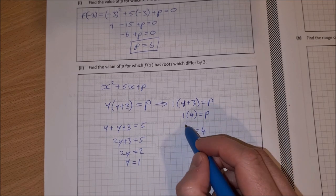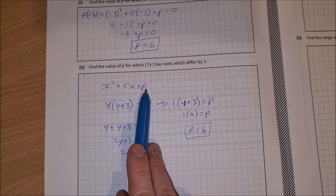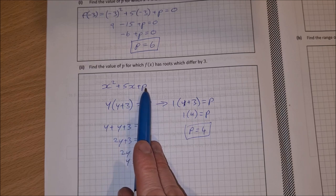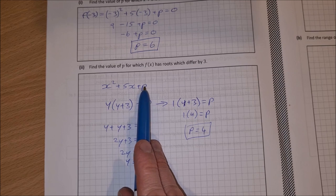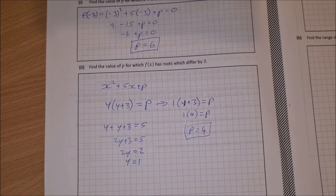And you can double check that. So if it was x squared plus 5x plus 4, then you'd factorize that to get 4 and 1. 4 by 1 would give you 4. 4 plus 1 would give you 5. So it works out. P equal to 4.